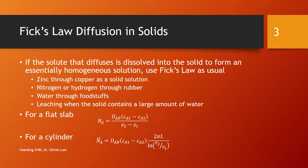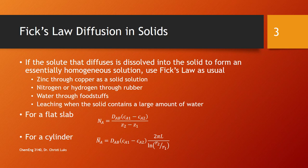Basically here I'm saying that the solute is going to dissolve into the solid to form an essentially homogeneous solution. Examples where this happens include solid solutions—so zinc moves and migrates through copper, and that's a solid solution that's fairly homogeneous. Nitrogen and hydrogen through rubber.